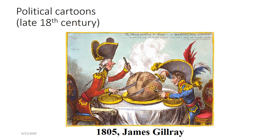That was not true with the work of James Gilray, who is often called the father of political cartoons. He was an English artist who started working in the late 1700s. One of his more famous works — 'The Plum Pudding in Danger' from 1805 — shows Napoleon and King George carving up the world between them.